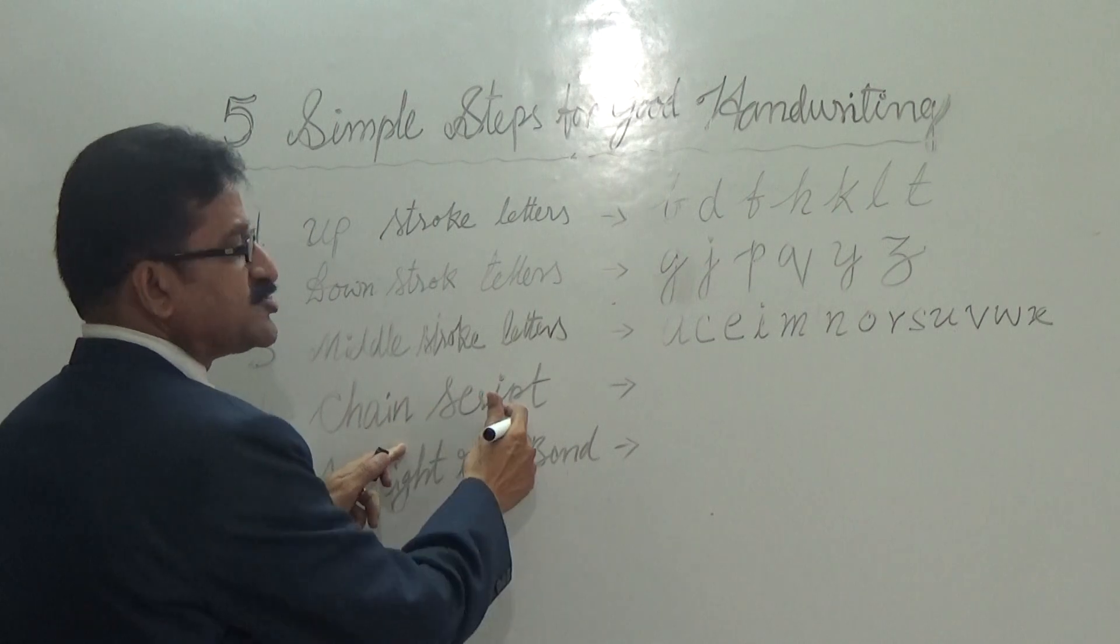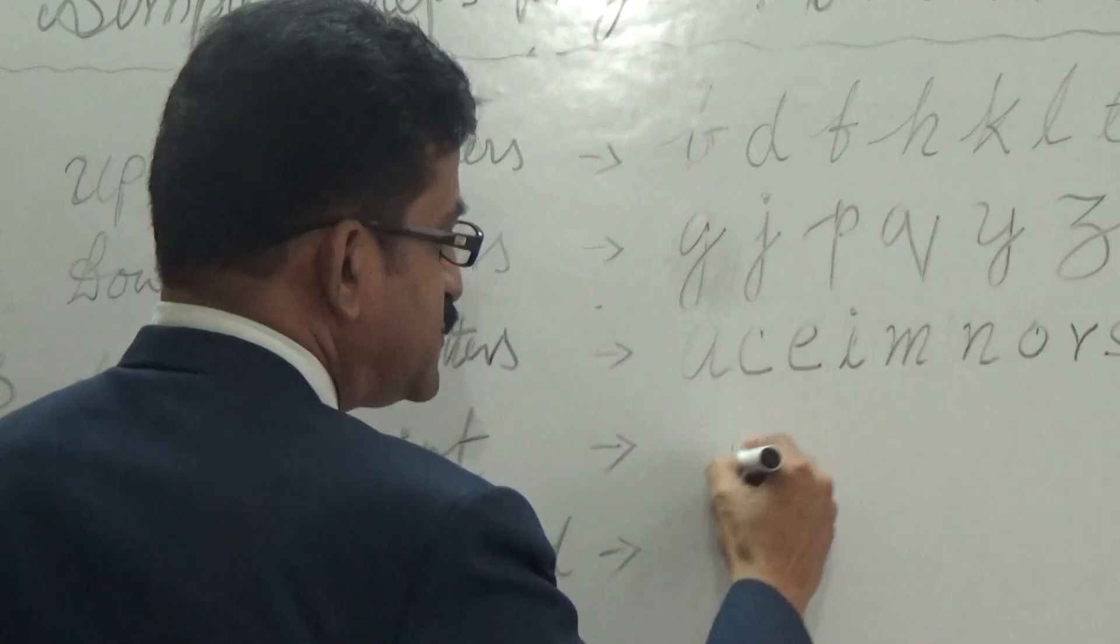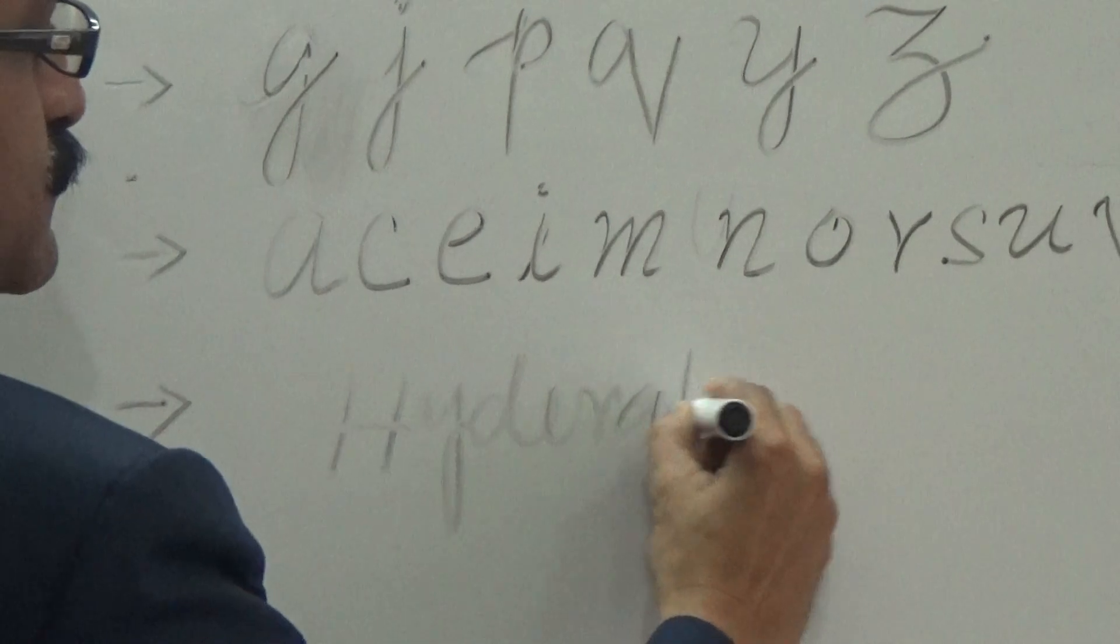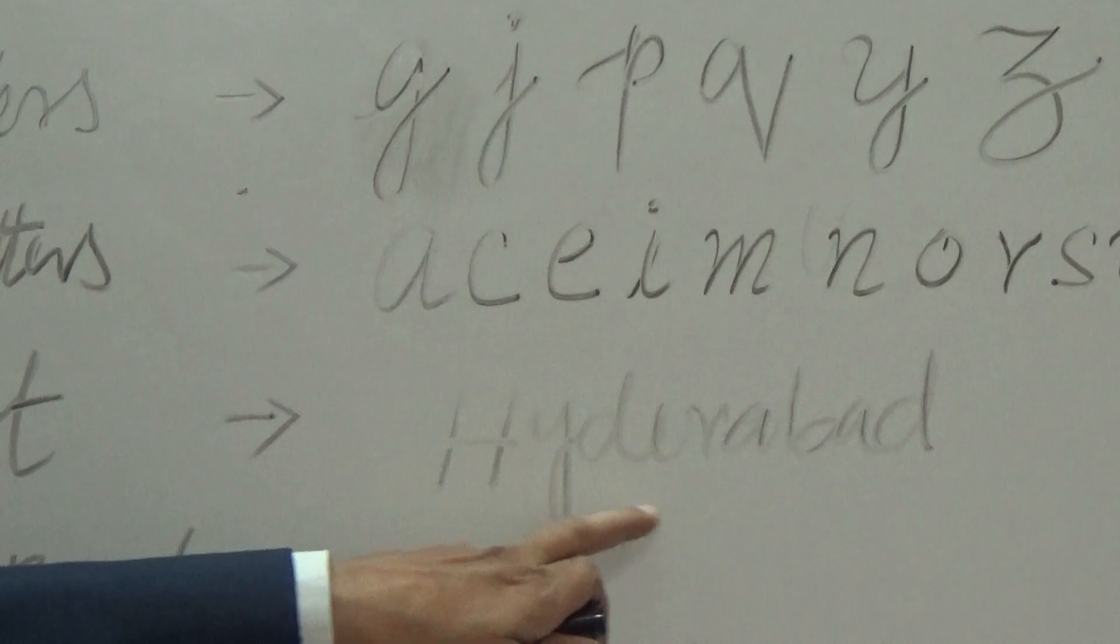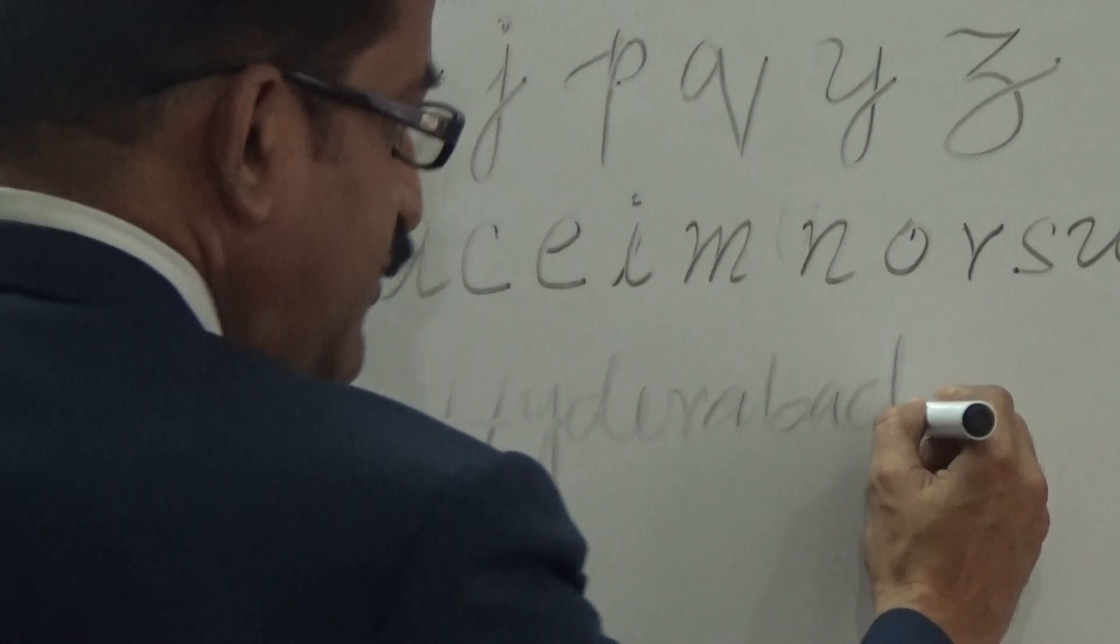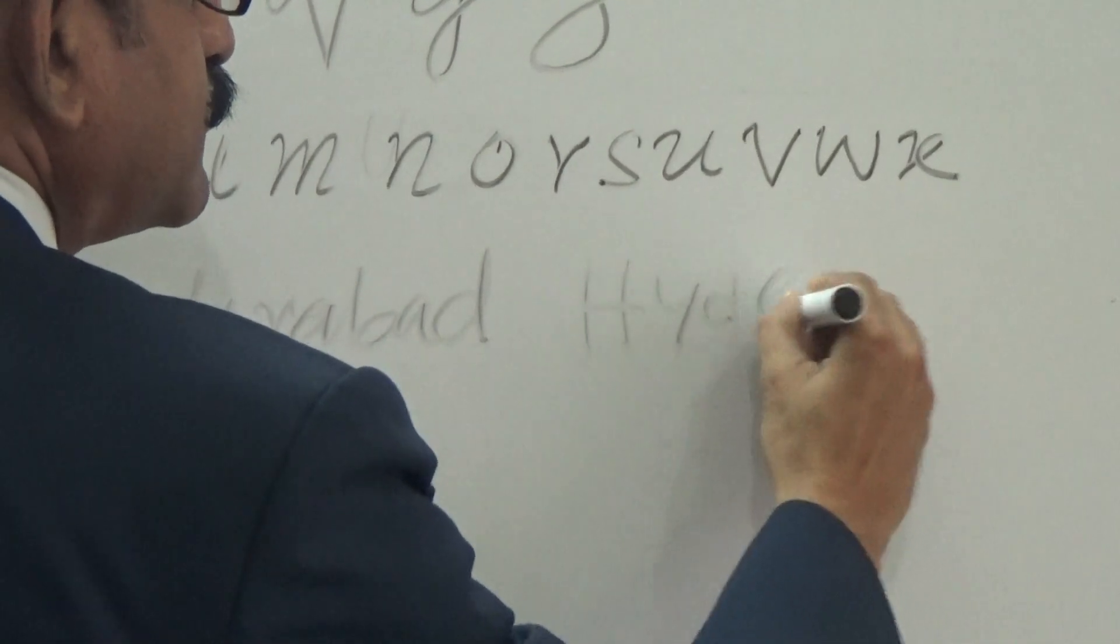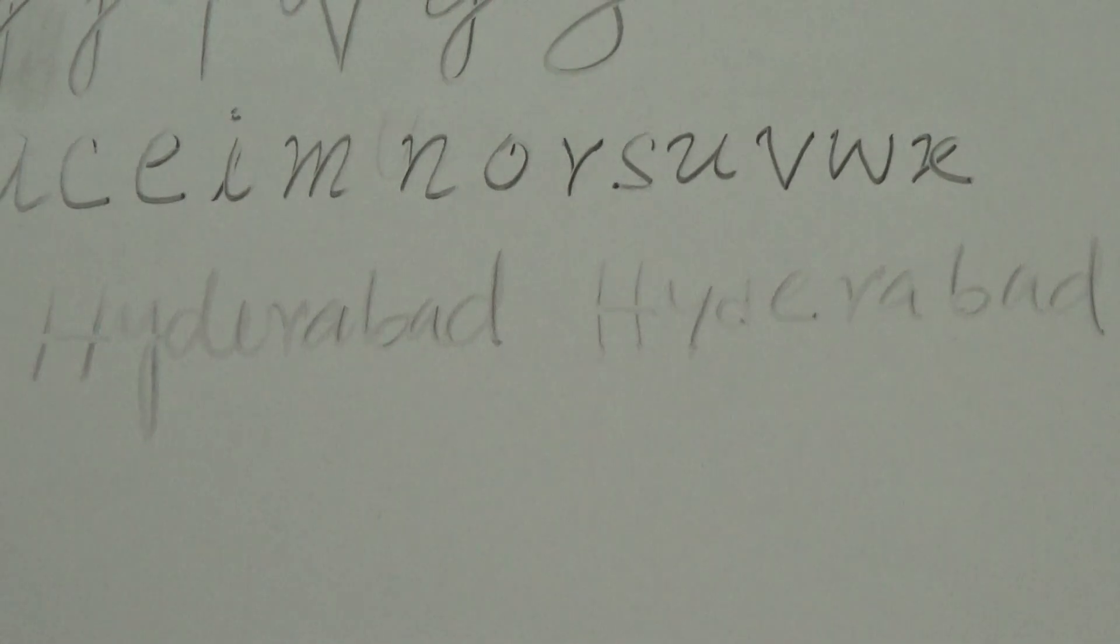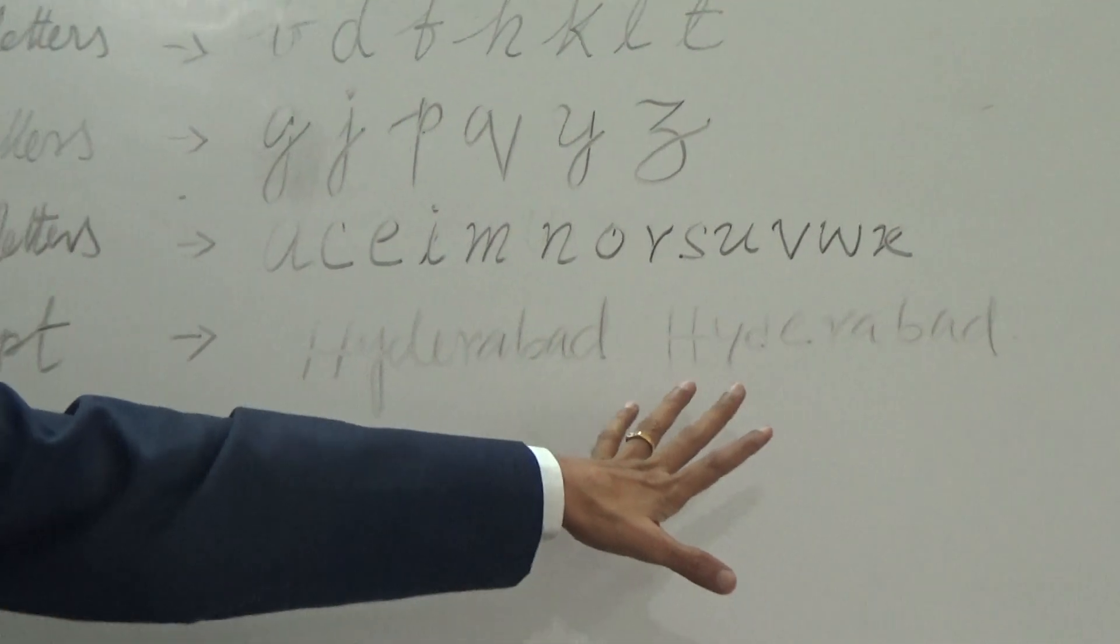For example, I write one word. I write it with, sorry, I mean slight right bend. It's only just a chain script. And for example, if it is written like this. These are individual letters. They are not chain script. So these two things are not good.